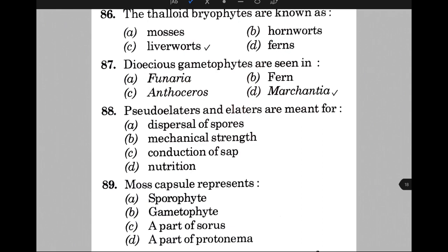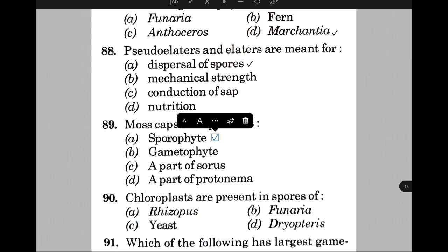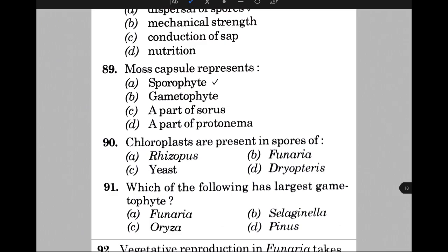Moss capsule represents — the answer is option A, that is sporophyte. Chloroplasts are present in spores of — the answer is option B, that is Funaria. Which of the following has the largest gametophyte? The answer is A, that is Funaria.